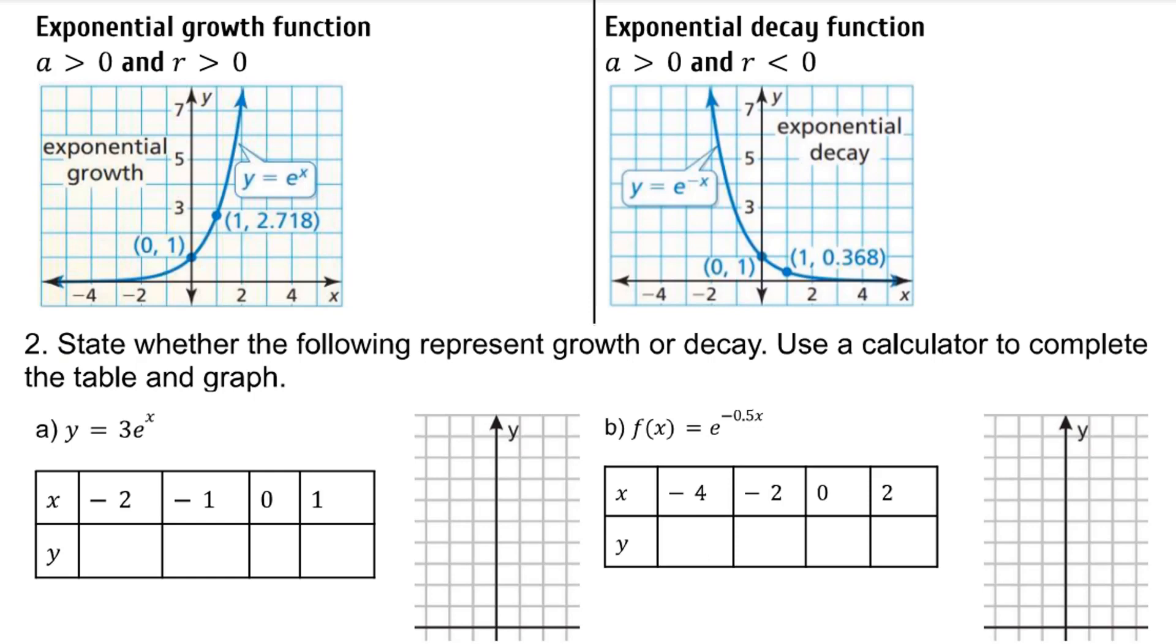For number 2, state whether the following represent growth or decay. Use a calculator to complete the table and graph. When we're simplifying with e, we leave things in terms of e. But for this table for graphing, I'm going to get decimal approximations.